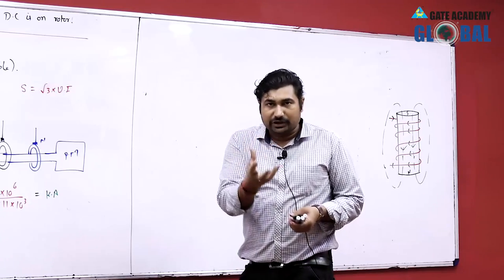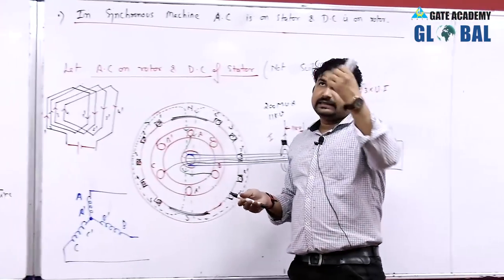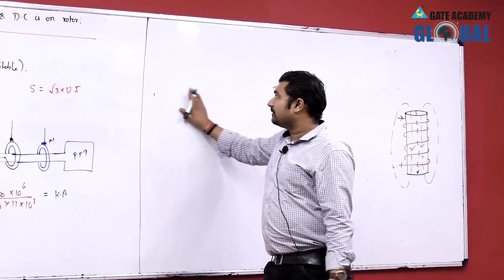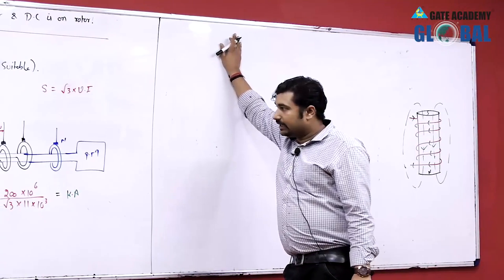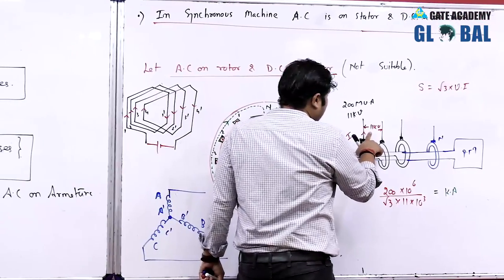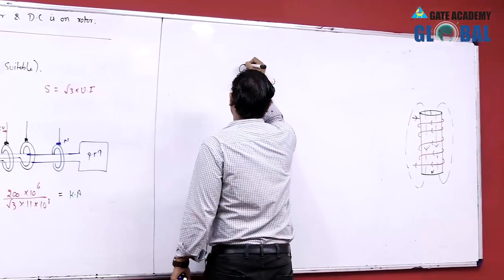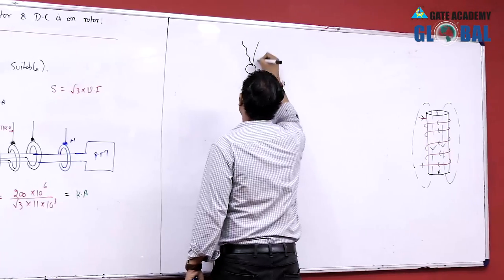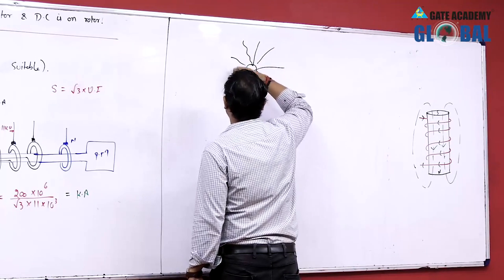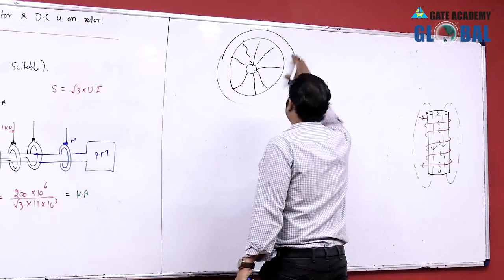In order to reduce the size of a machine, we have to reduce the overall insulation. Voltage rating depends upon the insulation level provided. The wire used in the rotor would need an insulation level of nearly 11 kV/√3, which is very high. This requires a very large diameter size of slip rings.